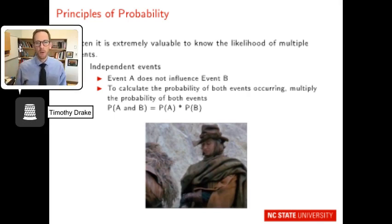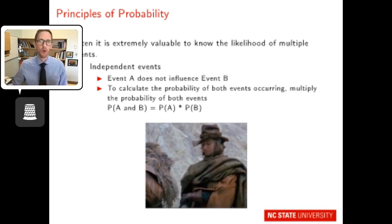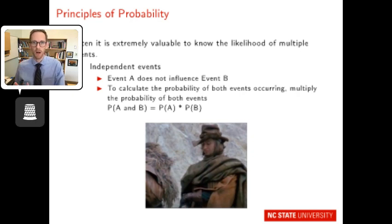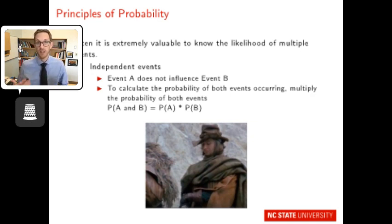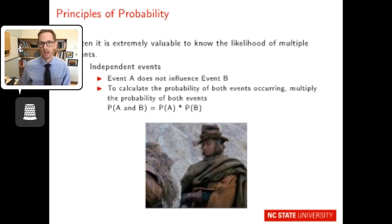There are times when we want to know the likelihood of multiple events occurring. It's important to consider whether events are independent or dependent. If events are independent, event A does not influence the outcome of event B. To calculate the probability of both occurring, you multiply the probability of A times the probability of B. The play and movie Rosencrantz and Guildenstern Are Dead opens with a character flipping a coin and getting heads repeatedly — each flip is independent, so that probability gets quite small.